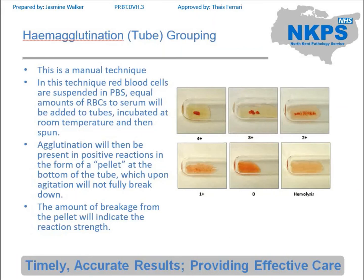Finally we're going to move on to haemagglutination, or tube grouping. This is a manual-only technique — it can't be done in an automated fashion. What happens is you use red blood cells with an equal amount of serum — again patient or reagent — they're added to a tube, incubated at room temperature, and then you spin these down. Once they've been spun down you gently agitate them to see whether or not the red cells have agglutinated and are tightly together or whether they haven't.